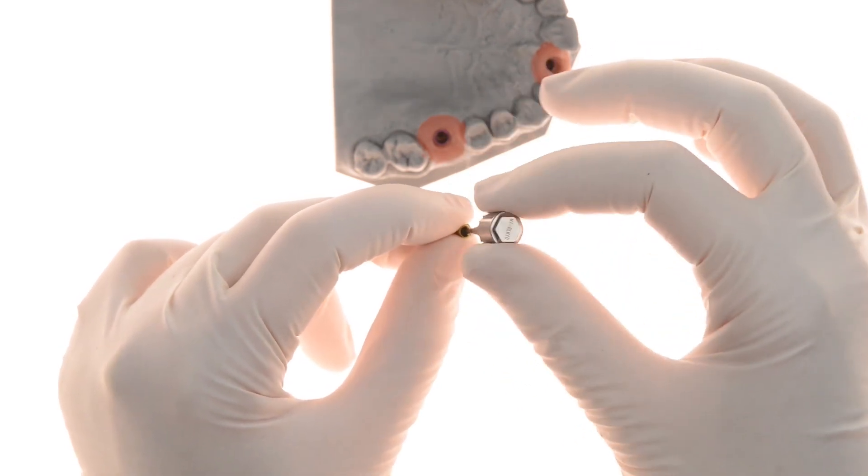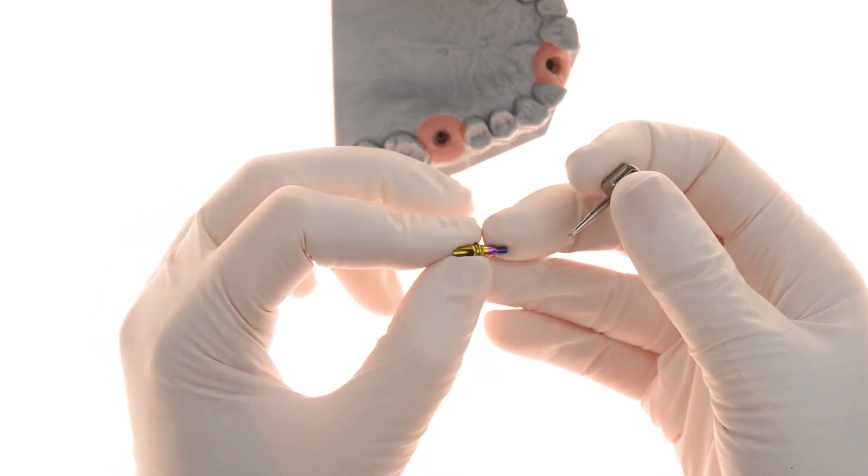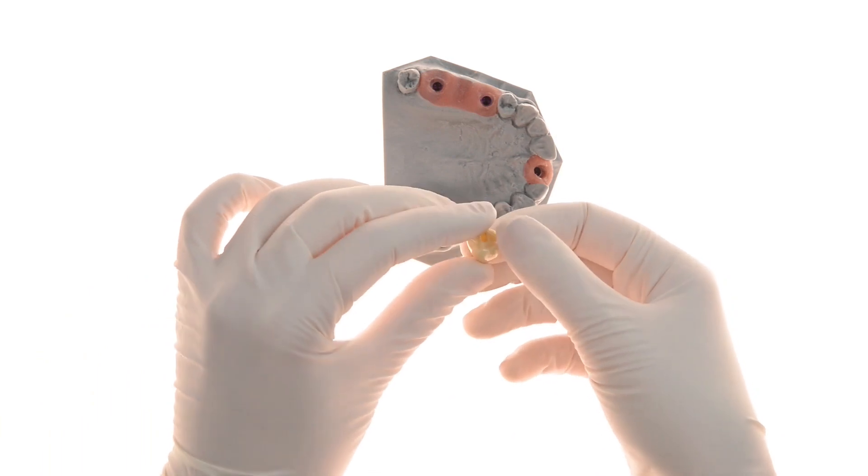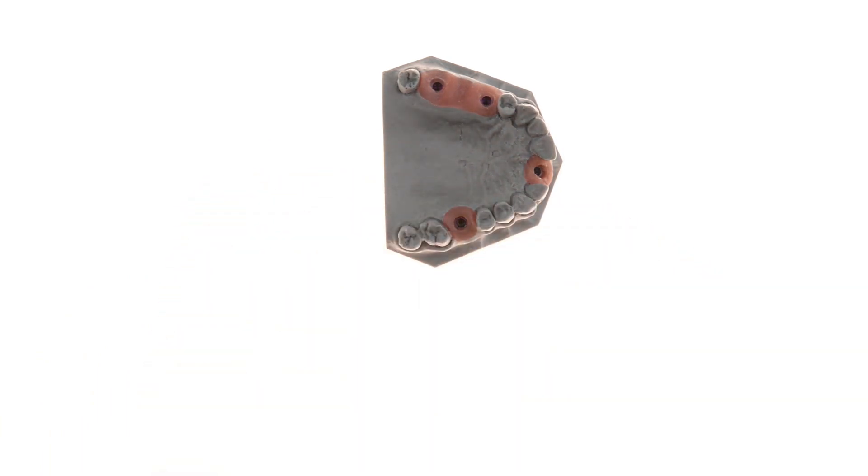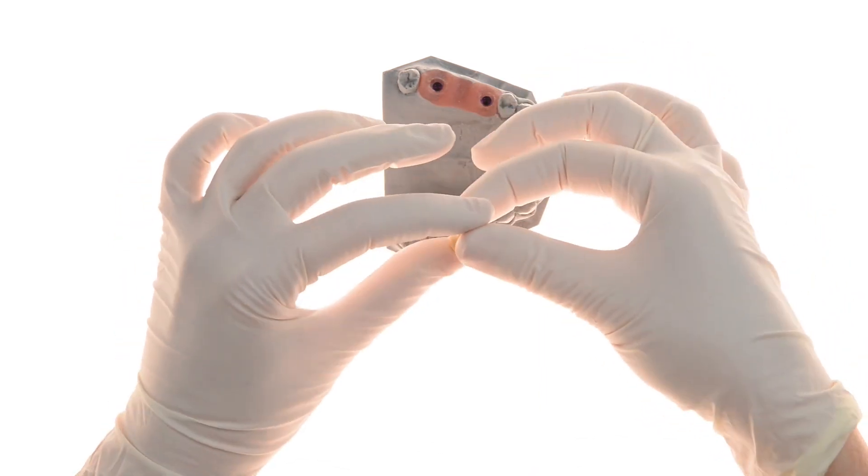Finally, the EasyBase restoration is screwed and tightened to the implant. Here you can see the crown prior to being cemented to the EasyBase. After cementation, the crown may be inserted into the implant and screwed into place.